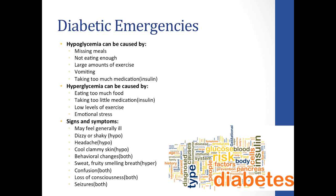Signs and symptoms of a diabetic emergency include generally feeling ill, dizziness or shakiness (commonly hypoglycemic), headache (also hypoglycemic), cool clammy skin, behavioral changes — like being "hangry" — sweet or fruity-smelling breath (commonly hyperglycemic, as too much sugar can cause a sweet smell), confusion, loss of consciousness, and seizures.